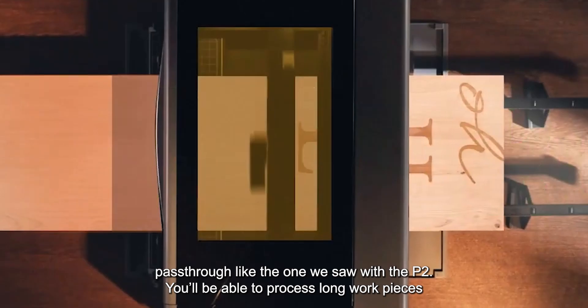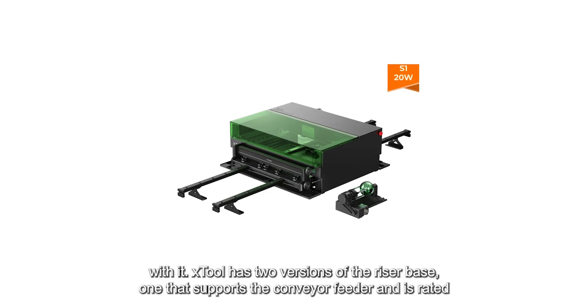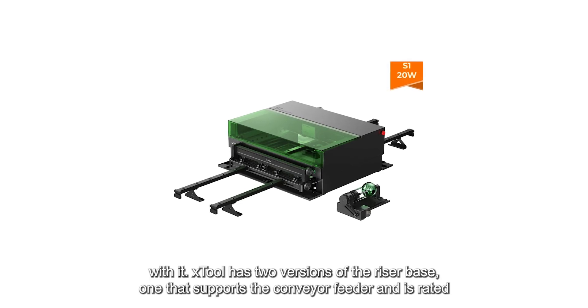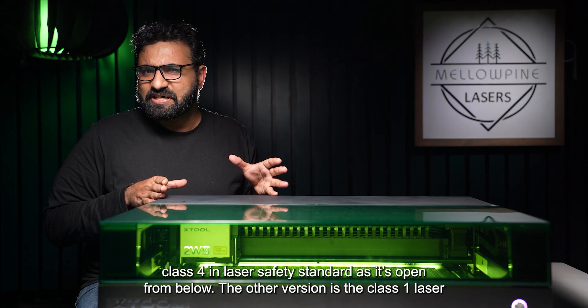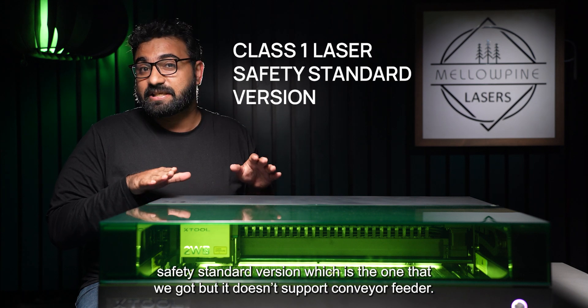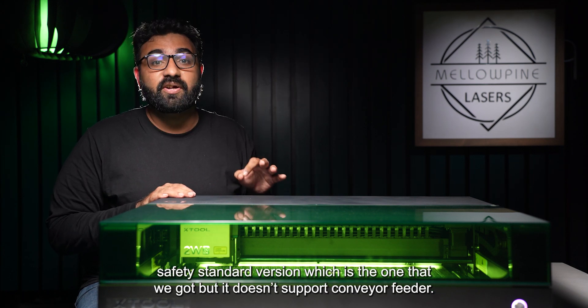Another interesting accessory is the automatic passthrough like the one we saw with the P2. You will be able to process long work pieces with it. Xtool has two versions of the riser base. One that supports the conveyor feeder and is rated class 4 in laser safety standards as it is open from below. The other version is the class 1 laser safety standard version, which is the one that we got, but it doesn't support the conveyor feeder.